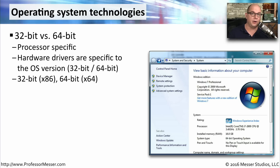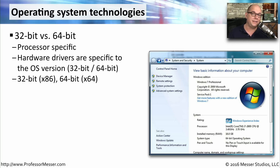The operating system running on your personal computer is probably a 32-bit or 64-bit operating system. You'll want to look at the configuration of your operating system to see exactly what kind you are using. This is usually determined by the type of processor you have. If your CPU is a 32-bit CPU, then you're running a 32-bit operating system. If you have a 64-bit CPU, you have the choice of running either a 64-bit or a 32-bit operating system.